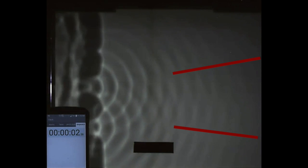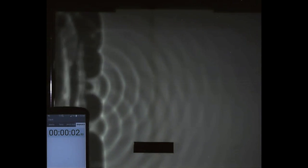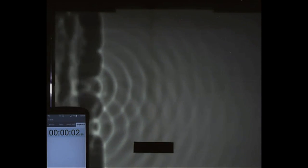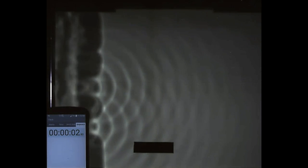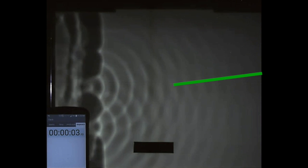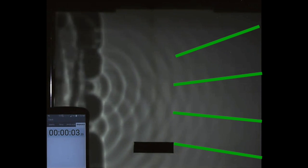When the two waves are in phase, they add together to form an even larger wave whose amplitude is the sum of the amplitudes of the two waves. This is called constructive interference. These green lines show where constructive interference is happening.